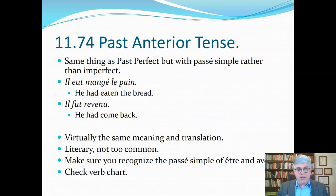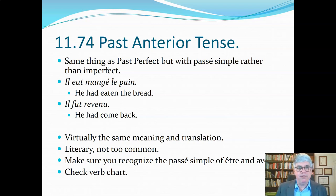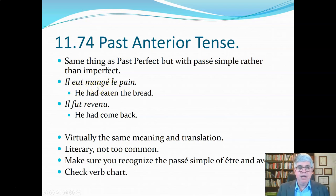Now let's look at the past anterior tense. Fortunately, it's pretty much the same thing as the past perfect or pluperfect, but instead of using the imperfect for the auxiliary verb, we use the passé simple. So: 'il eut mangé le pain.' Manger is conjugated with avoir, so normally 'il a mangé le pain' means 'he ate the bread.' But here the auxiliary is in the passé simple, so we translate it as 'had' rather than 'has' — 'he had eaten the bread.' The meaning is almost exactly the same as the pluperfect.